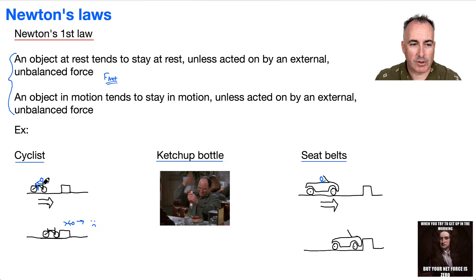What's that going to do? Well, it's going to do like the cyclist, where the bottle is like the bike and the ketchup is like the person. So when you stop the bottle, the ketchup wants to keep going right out that entrance. So that's actually a trick for ketchup.